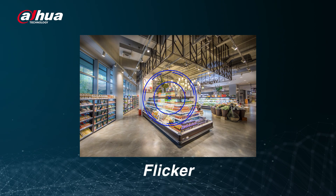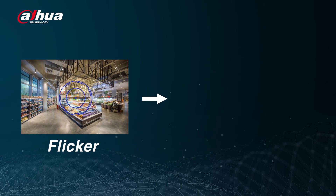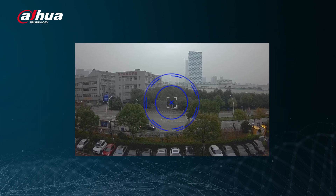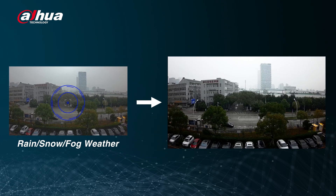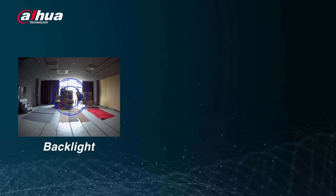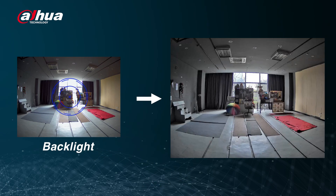Once the AISSA is on, the camera will intelligently identify the scenes and adjust the image parameters correspondingly to ensure the best quality for the users. Some supported scenes include rain, snow, fog, flicker, and more.